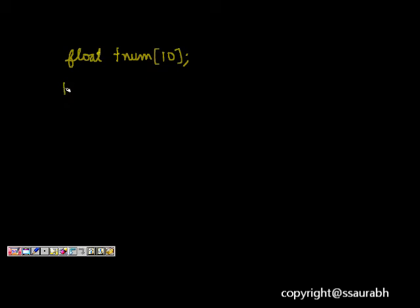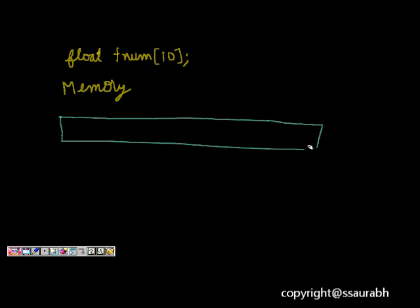This means now memory will be allocated. Let's see the memory consideration. What happens here is that now 10 memory locations will be allocated for all these numbers. This is the first one, f num 0, this is f num 1,